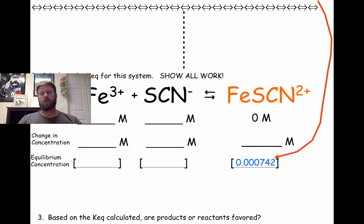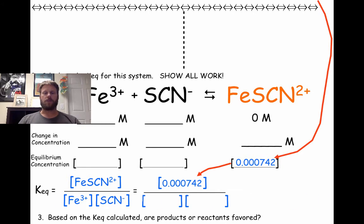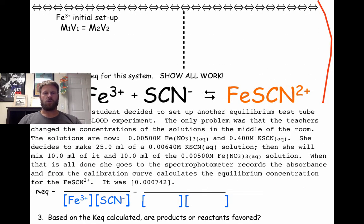Let's get started on the equilibrium part of the calculation. We know the equilibrium expression is products over reactants. It's a nice 1-to-1 ratio throughout the equation, so everything is raised to the first power. We already know the equilibrium concentration of our product. We need to find the equilibrium concentration of our reactants, so we first have to know the initial concentrations. Let's start with Fe3+. We know we're going to use 10 milliliters of the 0.5 molar solution of iron nitrate, so we know M1 and V1.